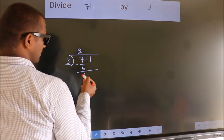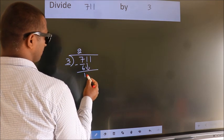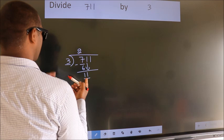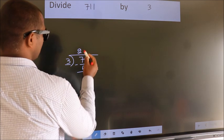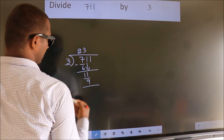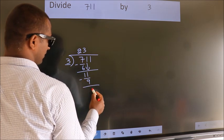After this, bring down the next number, 1. So we have 11. A number close to 11 in the 3 table is 3 times 3 equals 9. We subtract and get 2.